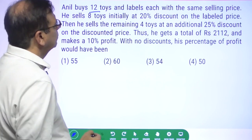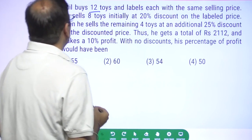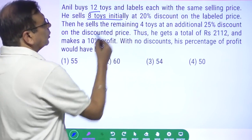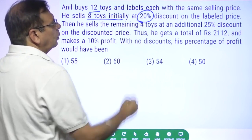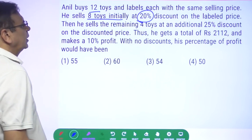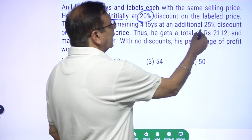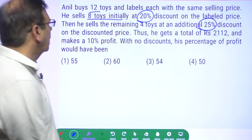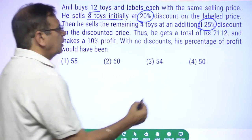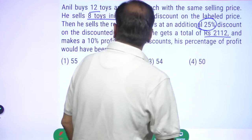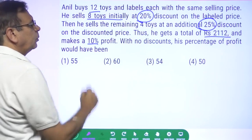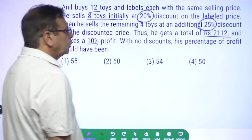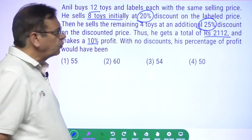Anil buys 12 toys and labels each with the same selling price. He sells 8 toys initially at 20% discount on the label price, then he sells the remaining 4 toys at an additional 25% discount. Thus he gets a total of Rs2112 and makes a 10% profit. With no discounts, what would his percentage profit have been?